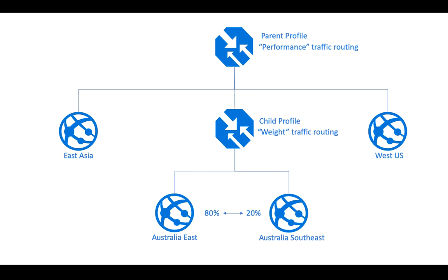So in practice: if Azure Traffic Manager receives traffic from a client in East Asia, it redirects that traffic to the East Asia endpoint. But if it receives traffic from Australia, that traffic is redirected to the child profile, and the child profile then redirects it to either Australia East or Australia Southeast based on the assigned weight. That's how you implement a nested Traffic Manager profile and configure different traffic routing methods for different endpoints.